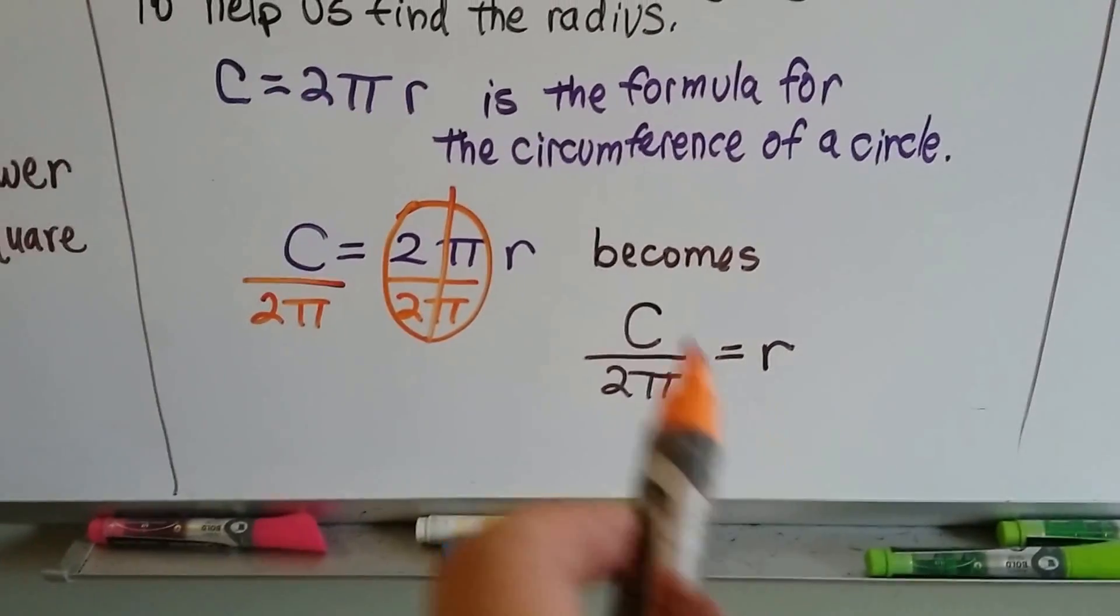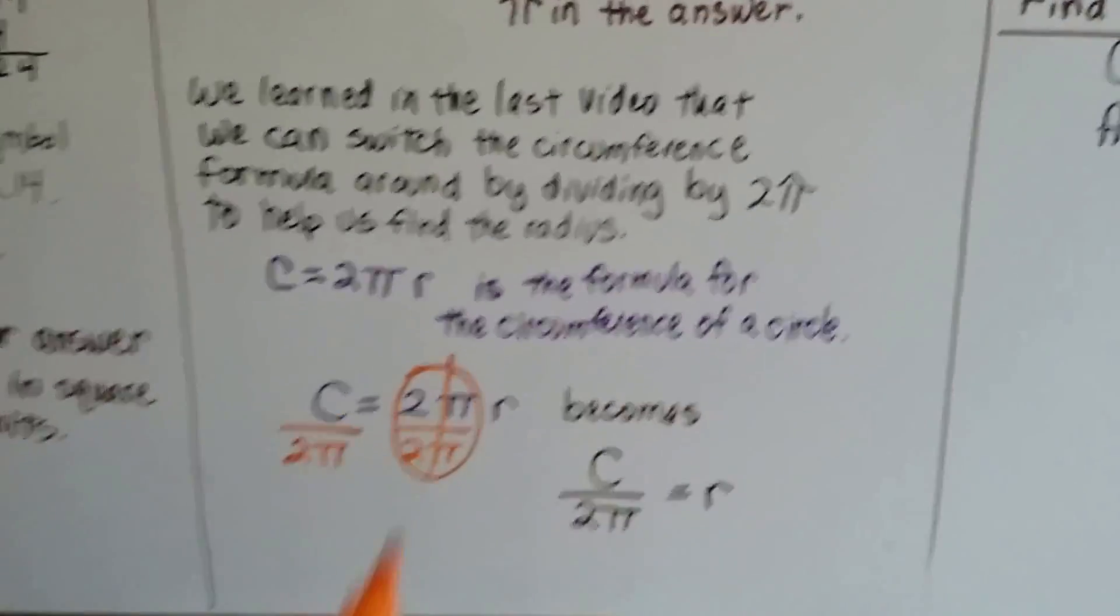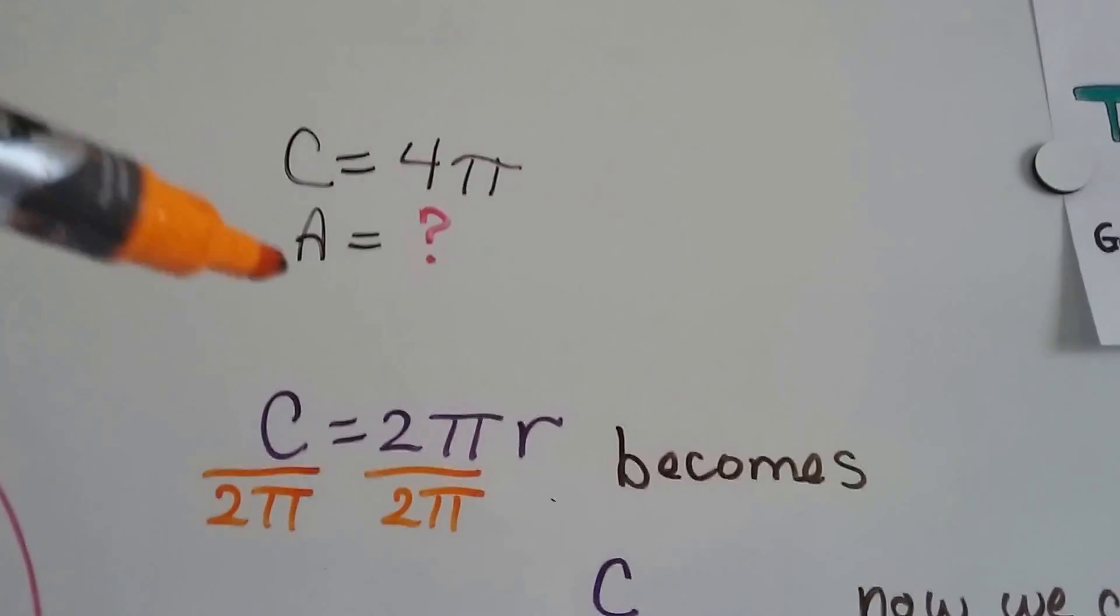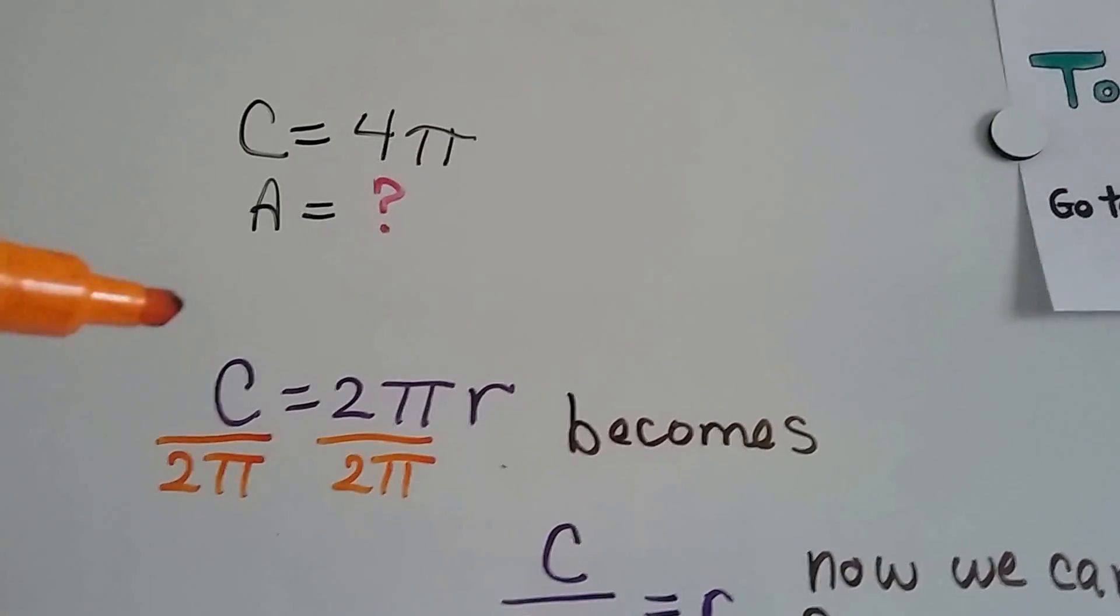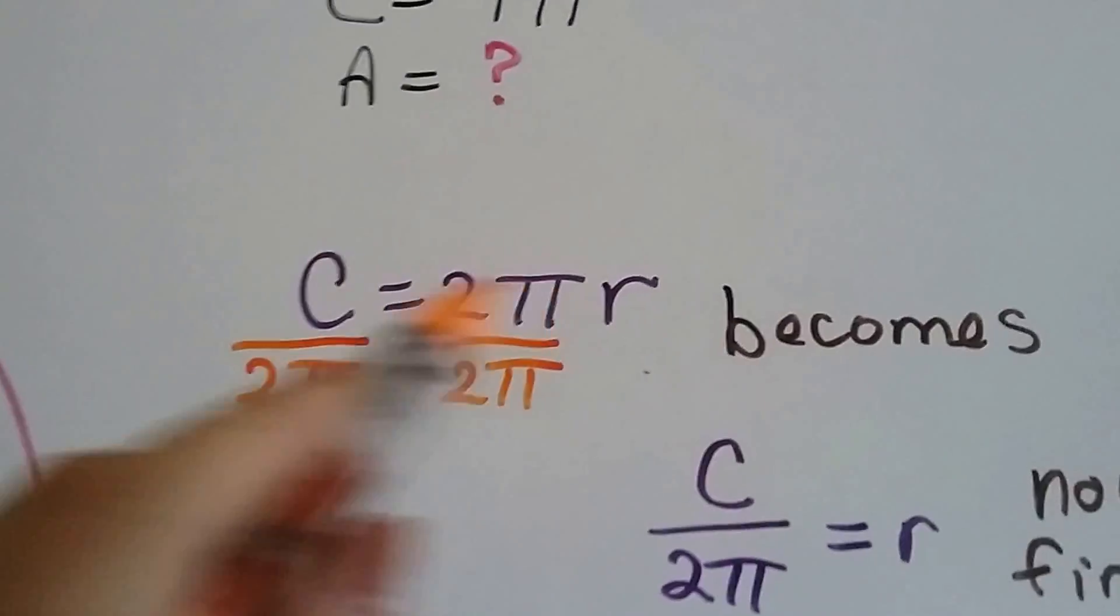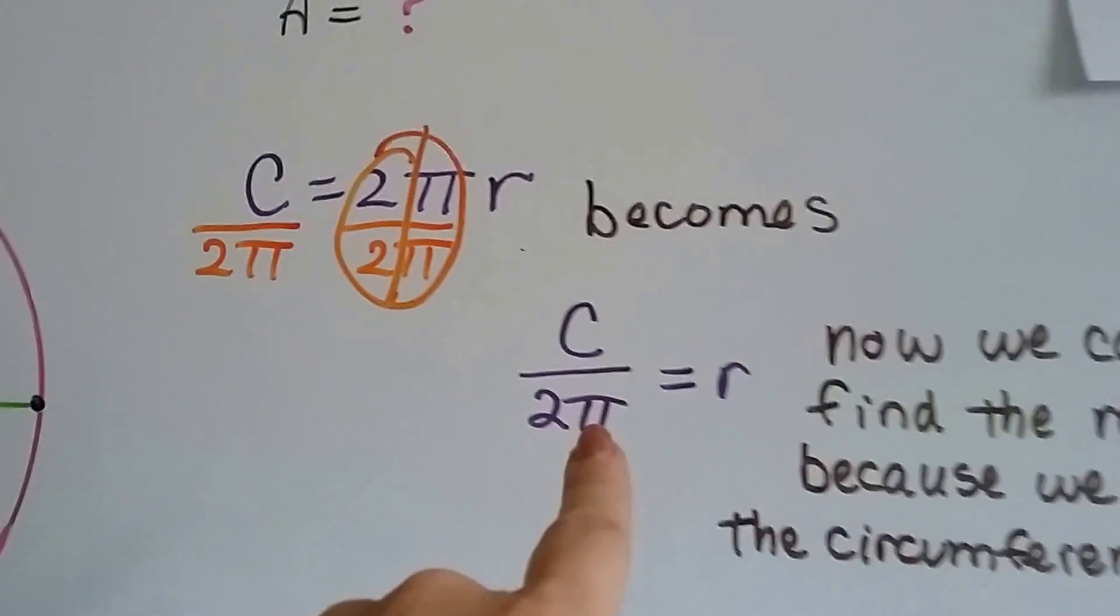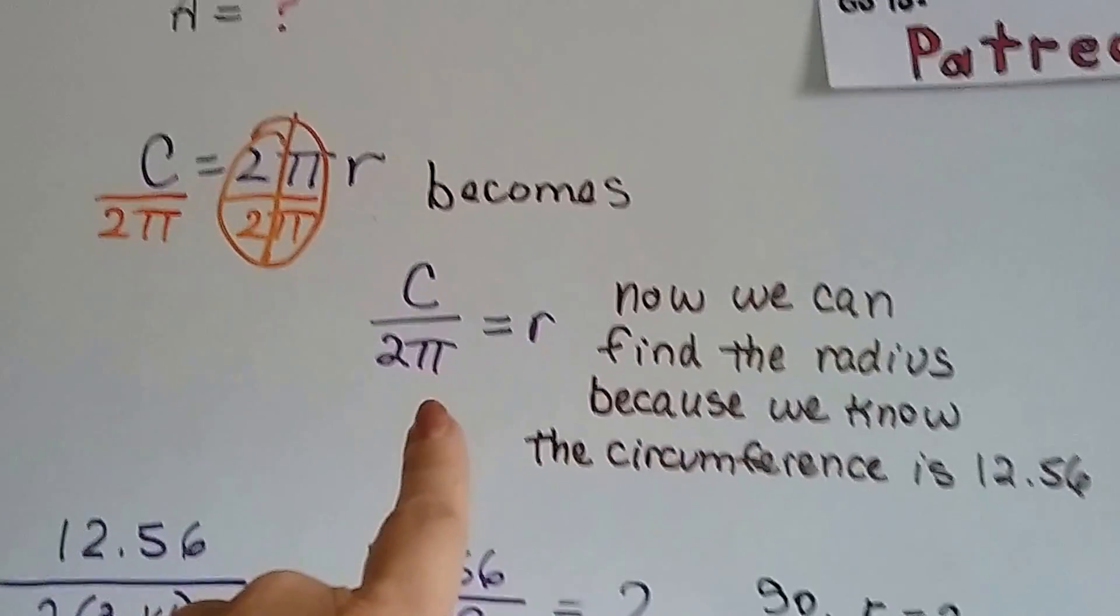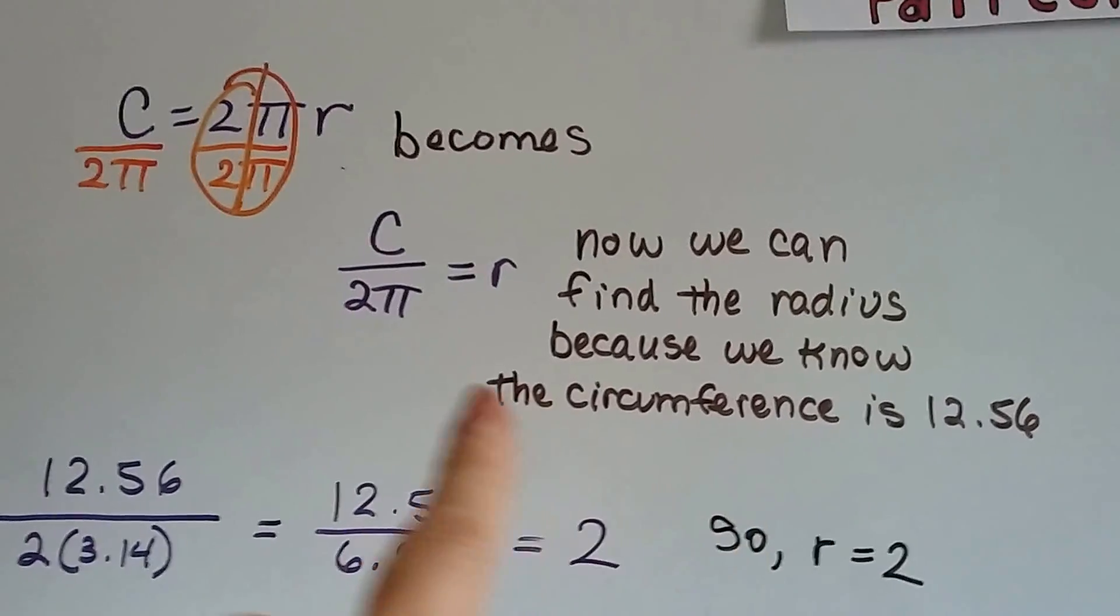Now we can find the radius, because we know what the C equals. We know it equals 12.56, right? We're getting there. So, we switched this formula around, the circumference formula, and we eliminated this 2 pi. So now our formula says circumference divided by 2 pi is equal to the radius. So now we can find the radius, because we know what the circumference is. It's 12.56, right?